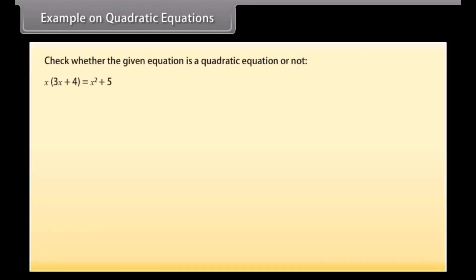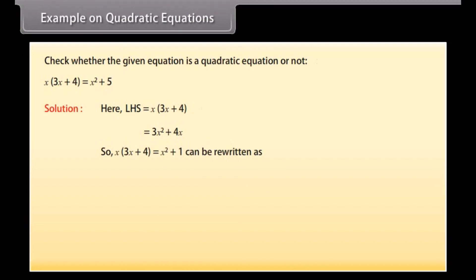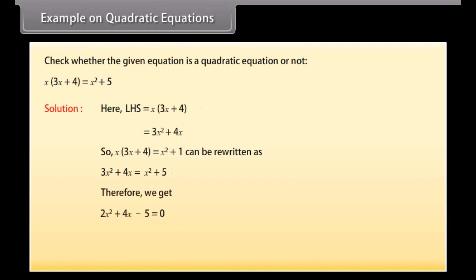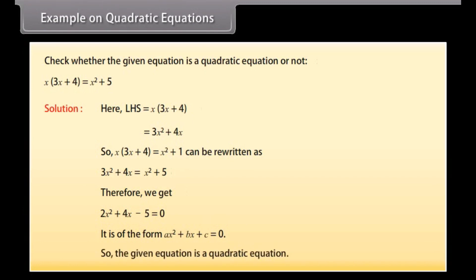Example on quadratic equations. We will now check whether the given equation is a quadratic equation or not. Here, LHS = x(3x + 4) = 3x² + 4x. So x(3x + 4) = x² + 1 can be written as 3x² + 4x = x² + 5. Therefore, we get 2x² + 4x − 5 = 0. It is of the form ax² + bx + c = 0, so the given equation is a quadratic equation.